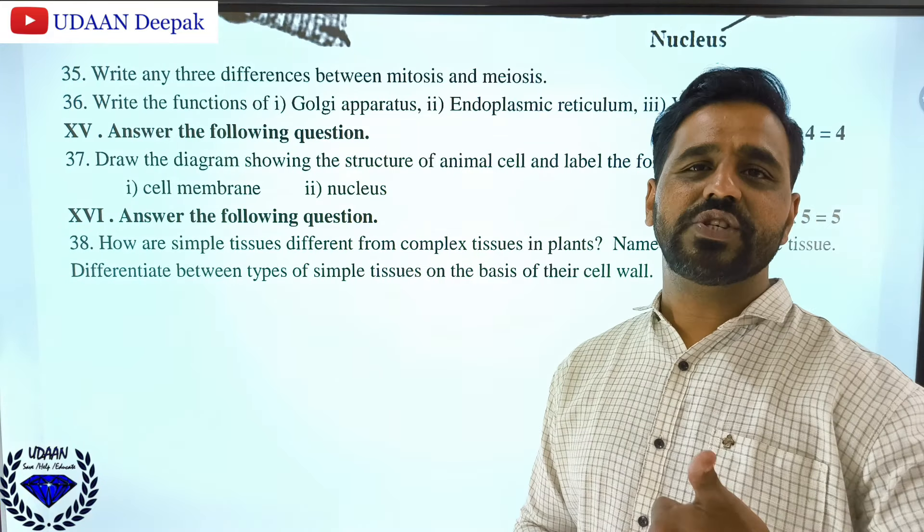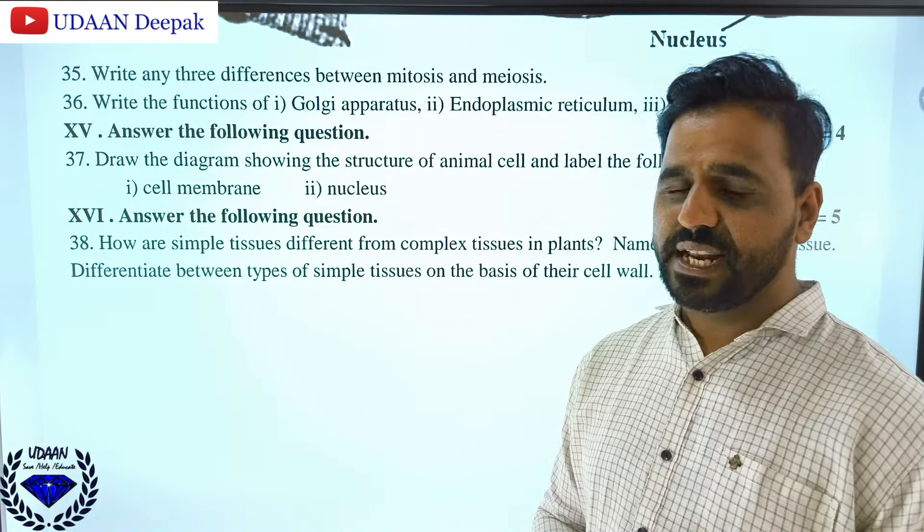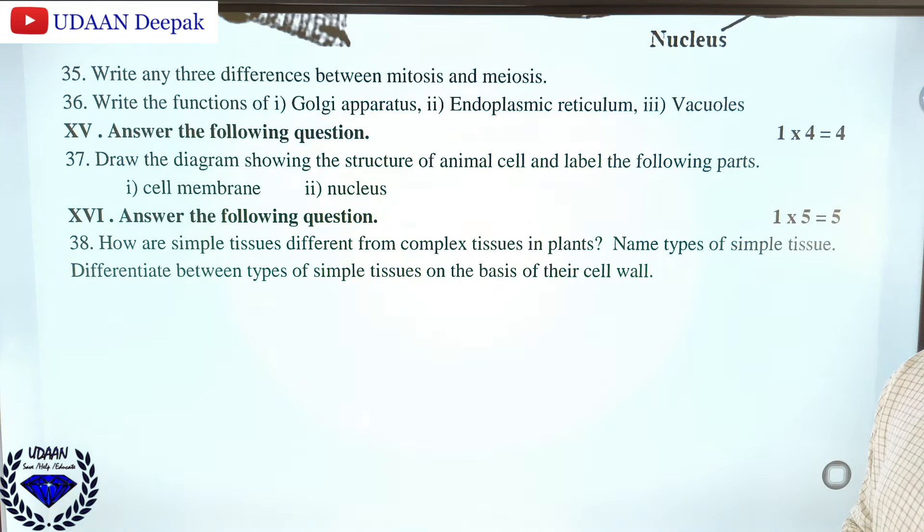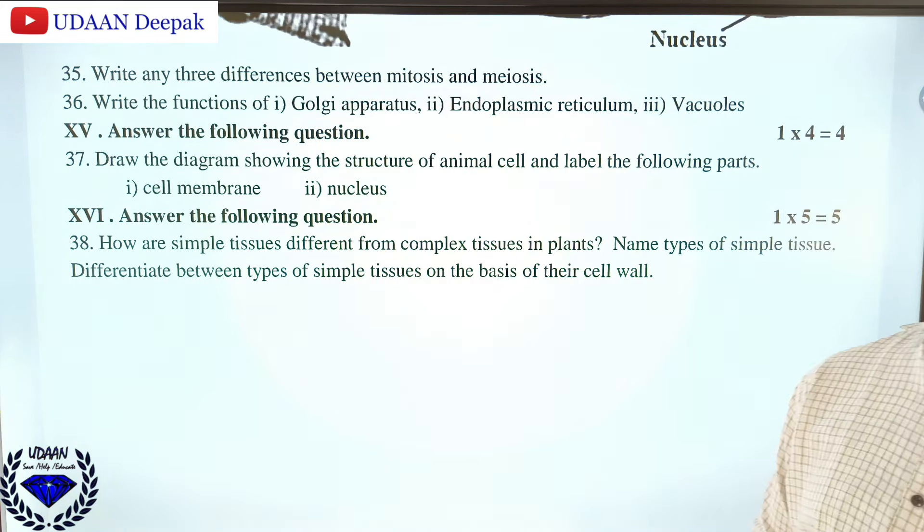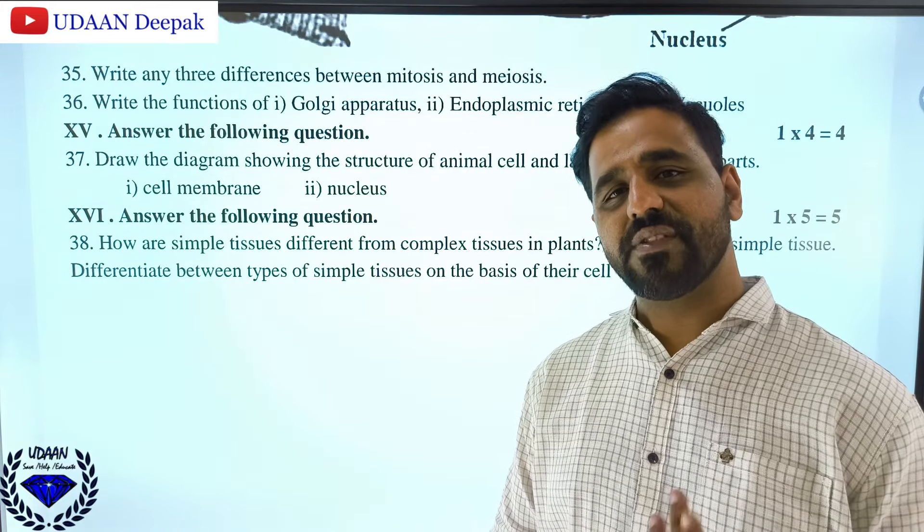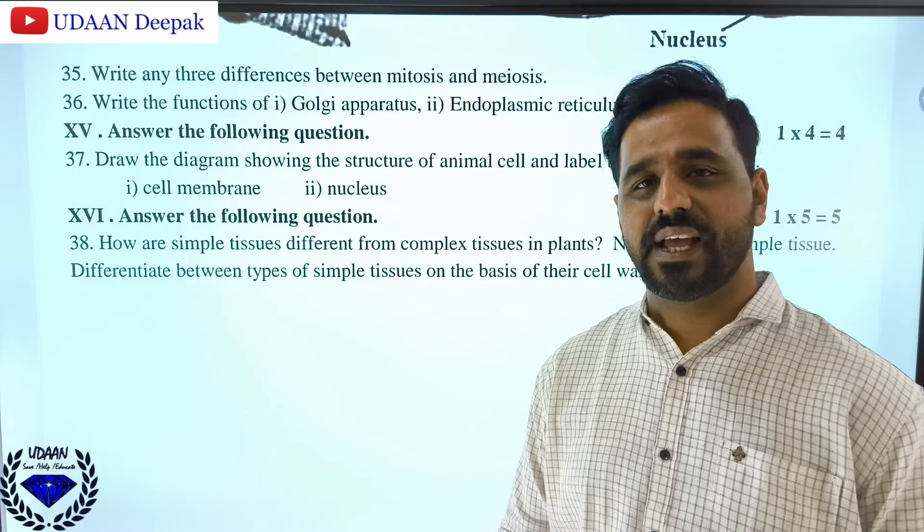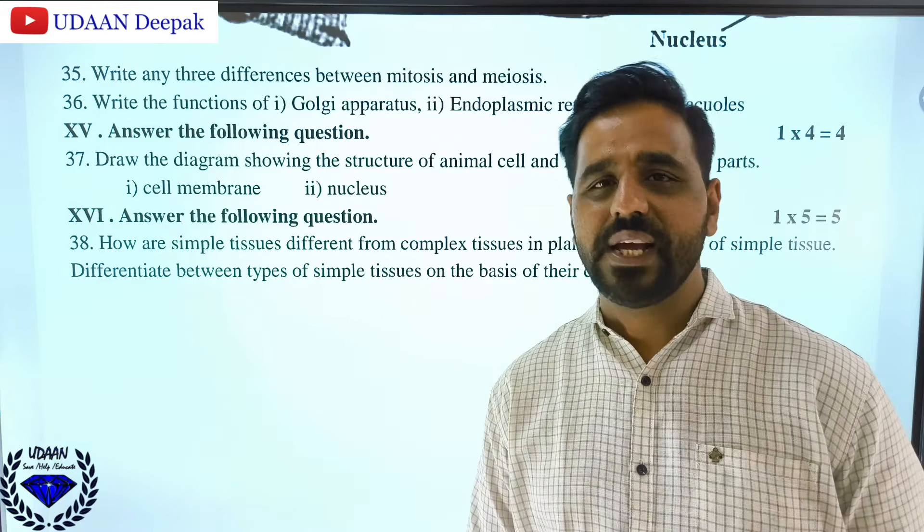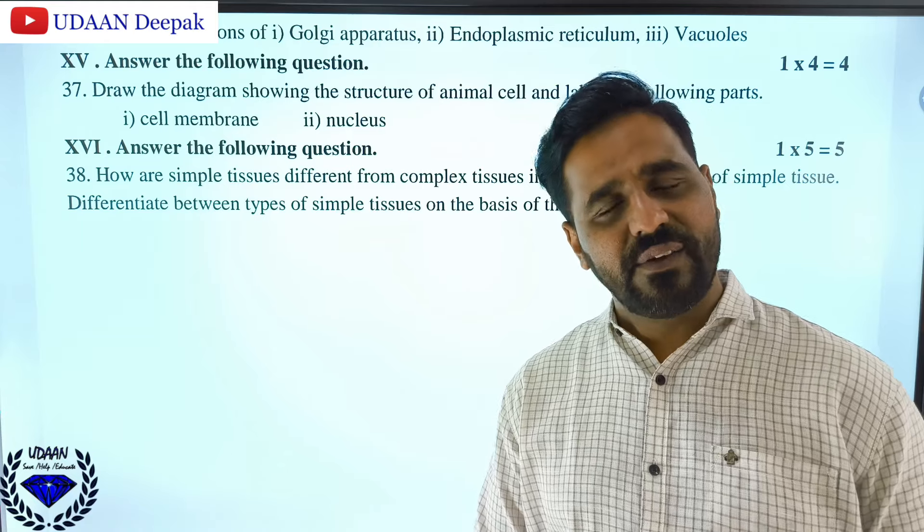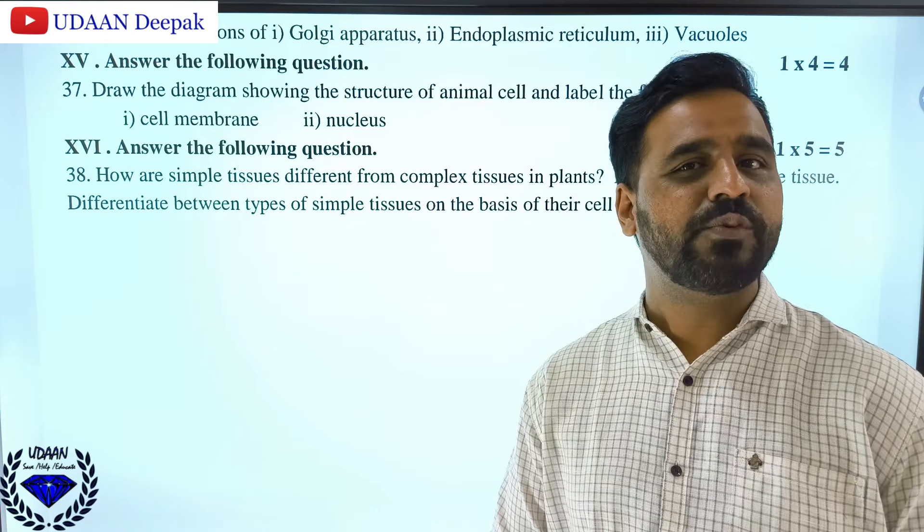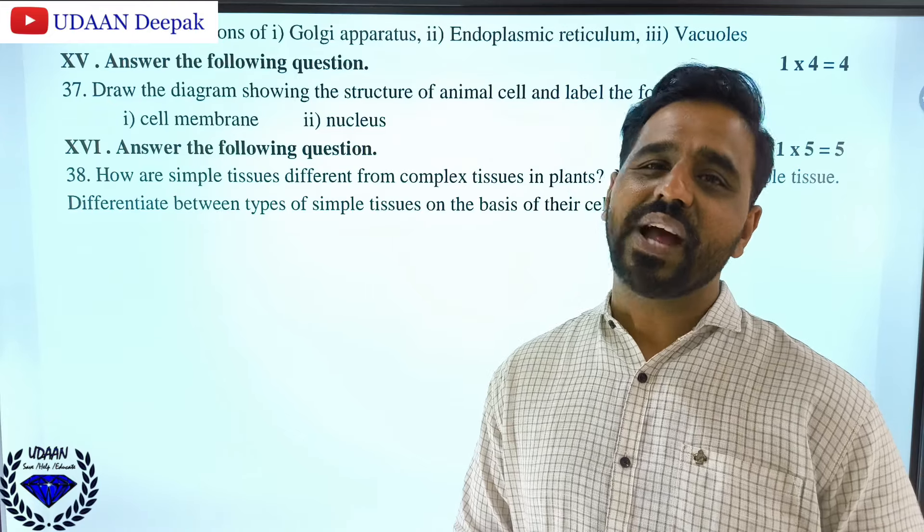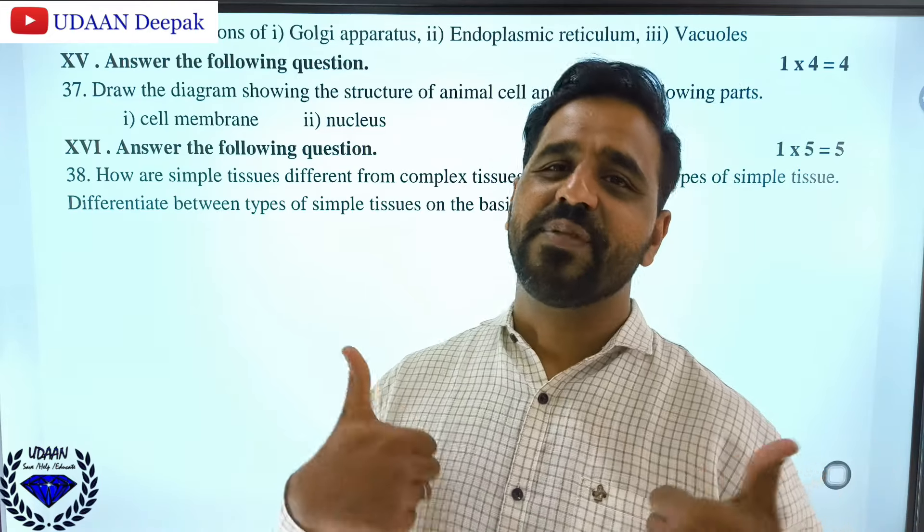Differentiate between types of simple tissues on the basis of their cell wall. In parenchyma, the cell wall is very thin. In collenchyma, they have thick cell walls, whereas in sclerenchyma they also have thick cell walls. I hope you got this. If you are finding any difficulties or have any questions or feedback, kindly put it in the comment box below. I'm glad to answer most of your questions. Kindly like, share, and subscribe. Thank you.